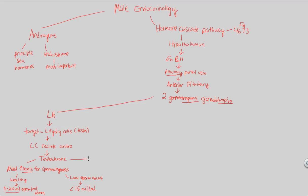Testosterone is also a principal hormone of puberty, driving sexual maturation in males. This causes the adolescent growth spurt — based on a different hormone cascade but still reliant on both testosterone and growth hormone. Puberty can only happen if testosterone levels are high enough to guide the process, and sex characteristics can only develop if puberty is occurring.